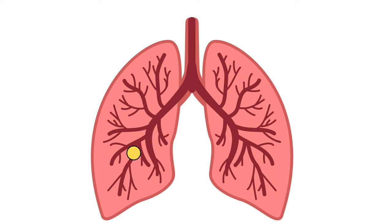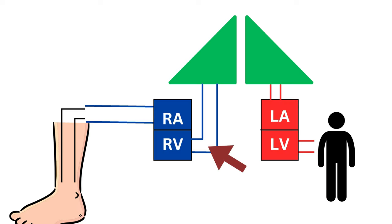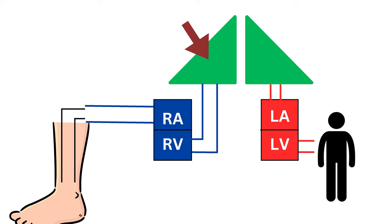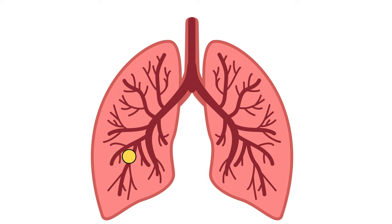So a clot has blocked one of the branches of your pulmonary artery — what's the big deal? Well, your pulmonary artery is transporting all the deoxygenated blood that your heart just received from the body. It carries this blood to the lungs to get it oxygenated and sends it back to the heart to pump it to the rest of the body, providing the necessary oxygen and nutrients for every living cell. So when there's a block, the blood supply to the area of the lung supplied by that branch is cut off.